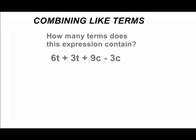In this tutorial, we are going to use an algebraic expression and simplify it by combining like terms. In this expression, we have 6t plus 3t plus 9c minus 3c.